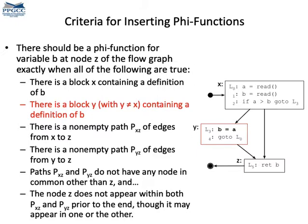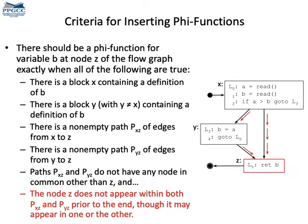Anyways, we need to have in the program another basic block, let's call it y, that is different than x. And y must contain definition of b as well. Then we need to have a path from x where b is defined to z. And another path from y where b is also defined to z. And these paths can only meet at z. And these two paths are the first two paths that touch z coming from x and y.